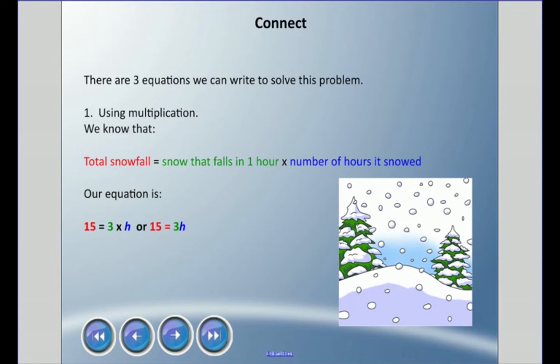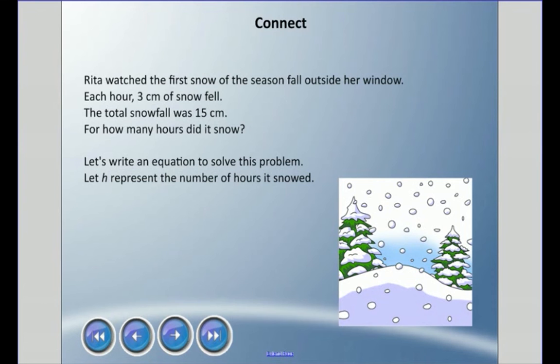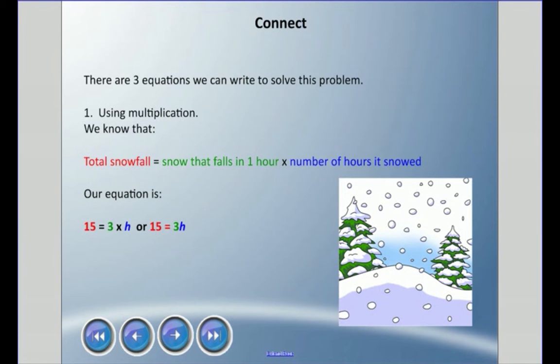There are three equations we can write to solve this problem. Using multiplication, we know that total snowfall equals snow that falls in one hour times the number of hours it snowed. Our equation is: total snowfall 15 centimeters equals the amount that fell in one hour, which was three centimeters, times H.